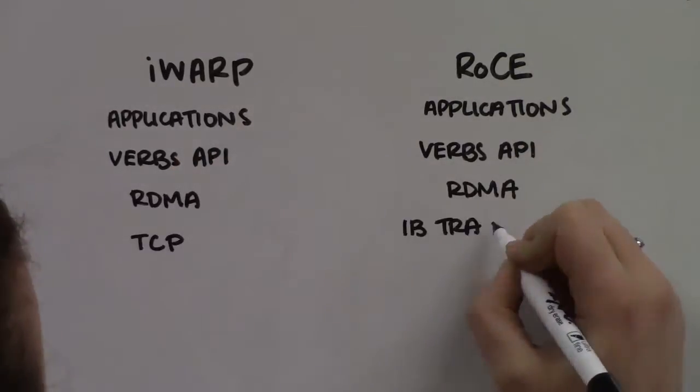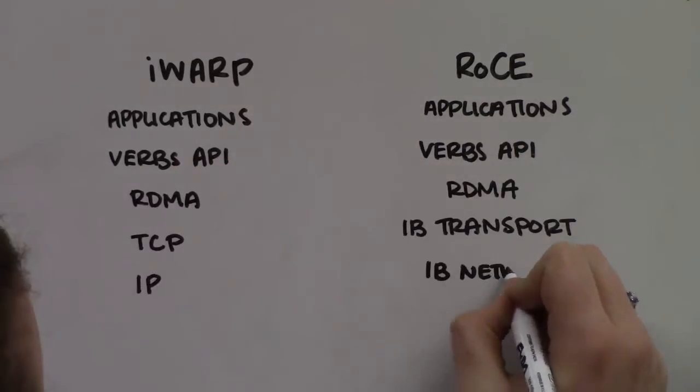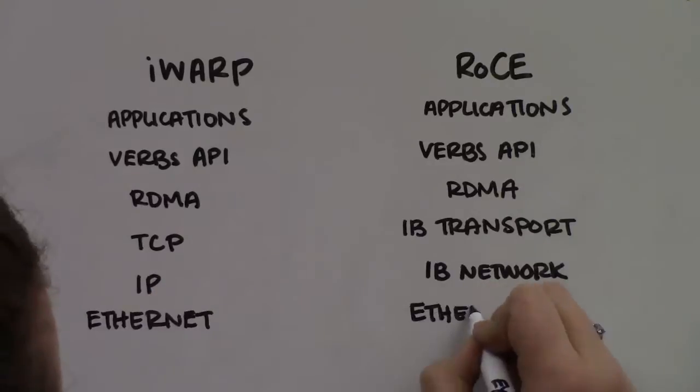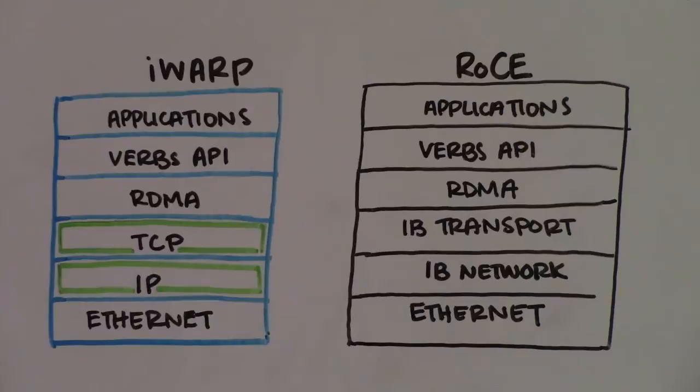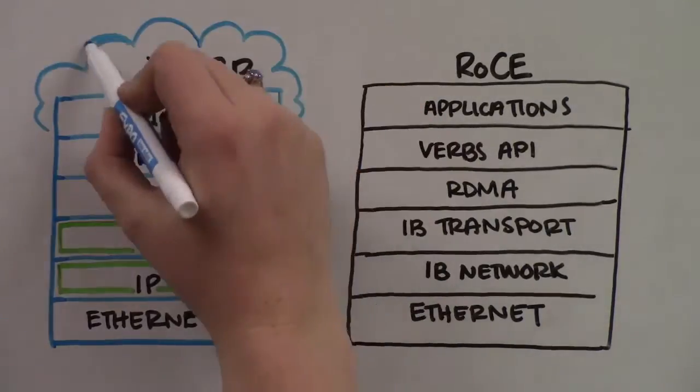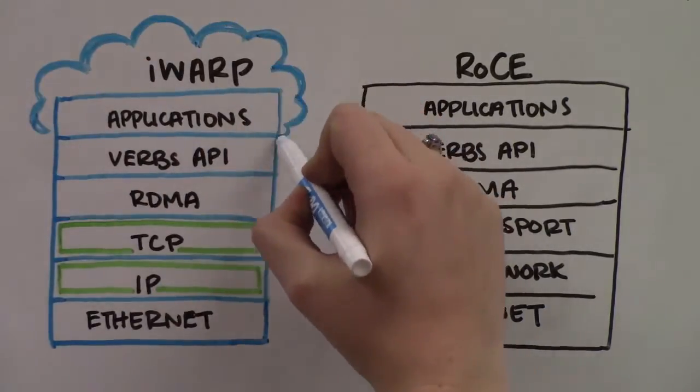iWARP is built on top of TCP/IP and takes advantage of all the power of TCP/IP Ethernet infrastructure, including routability and congestion management. iWARP is a scalable, cloud RDMA that goes anywhere the Internet goes.